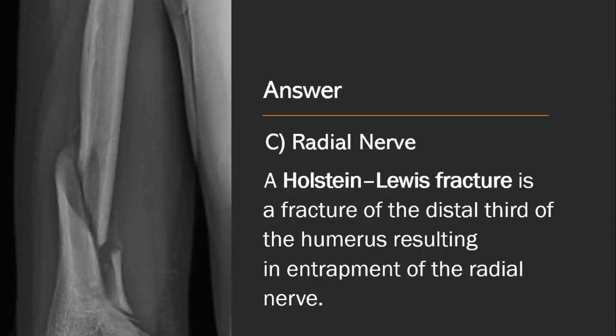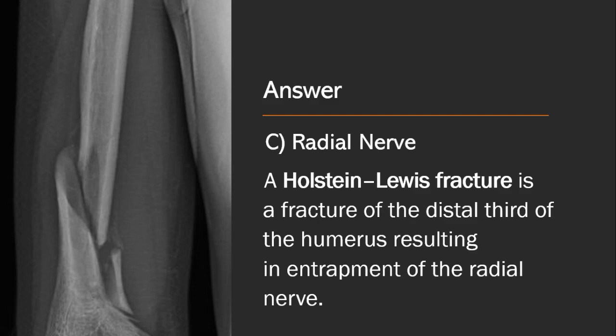The answer is option C, Radial nerve. A Holstein-Lewis fracture is a fracture of the distal third of humerus resulting in entrapment of the radial nerve.